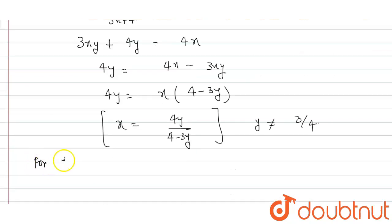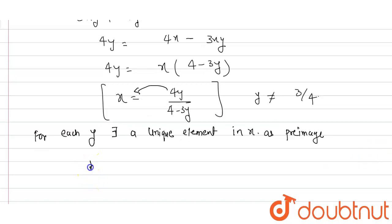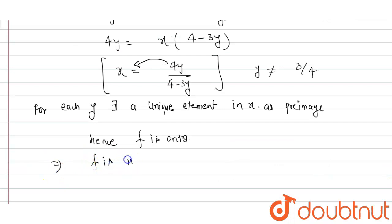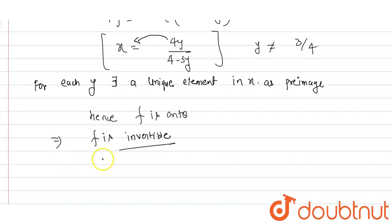For each y, there exists a unique element in x as pre-image. Hence f is onto. Therefore f is invertible, and f inverse of x equals 4x/(4 - 3x). This is my function's inverse.